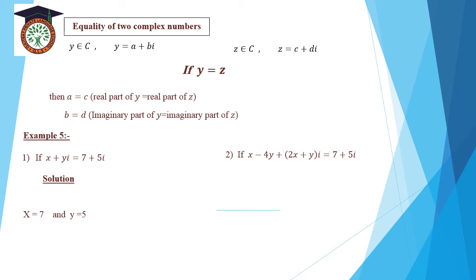Number 2: x minus 4y plus (2x plus yi)i equals 7 plus 5i. The real part: x minus 4y equals 7. The imaginary part: 2x plus y equals 5. We solve the two first-degree equations in two variables by substitution or elimination. Putting the two equations under each other and solving: x equals 3, y equals negative 1.